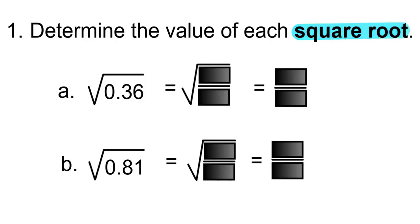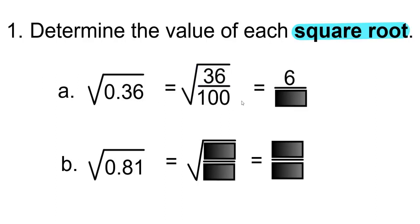What is the square root of 0.36? The last digit, which is the 6, is in the 100s column, therefore the fraction will be out of 100. The 36 will be your numerator. The square root of 36 is 6, and the square root of 100 is 10, so the answer is 6 over 10.